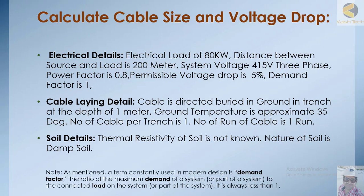We need cable installation details because there is a correction factor depending on the installation method. We must calculate the installed current carrying capacity. A manufacturer provides a base current rating, but if the cable is installed underground or in a tray, the rating must be multiplied by a derating constant. Soil resistivity and soil condition — whether damp or dry — are also important. Greater burial depth reduces current carrying capacity, while damper soil increases it.